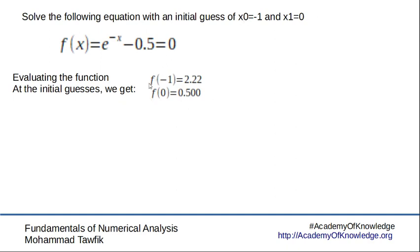For those two values of x, we need to evaluate the functions. So now we have two points, f of minus one and f of zero.